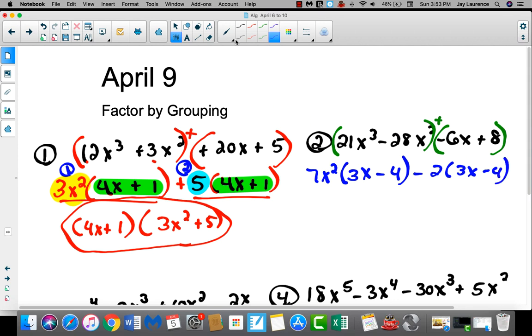Oh, did you hear that? I repeated the 3x minus 4. This quantity is a common factor. So I'm going to factor out the 3x minus 4, and what will be left here? The 7x squared. And then what will be left here? The minus 2. And there you go.